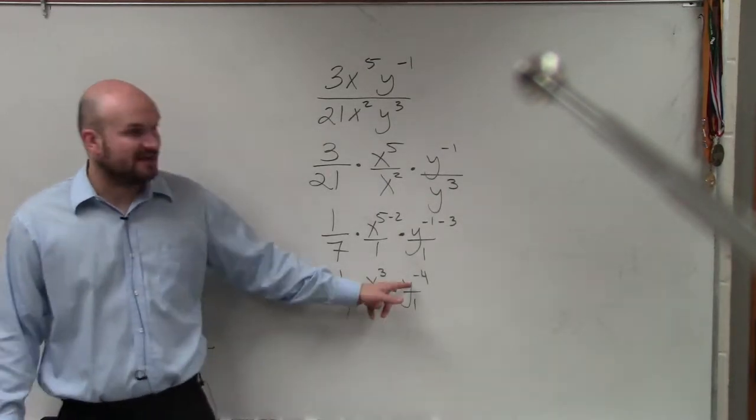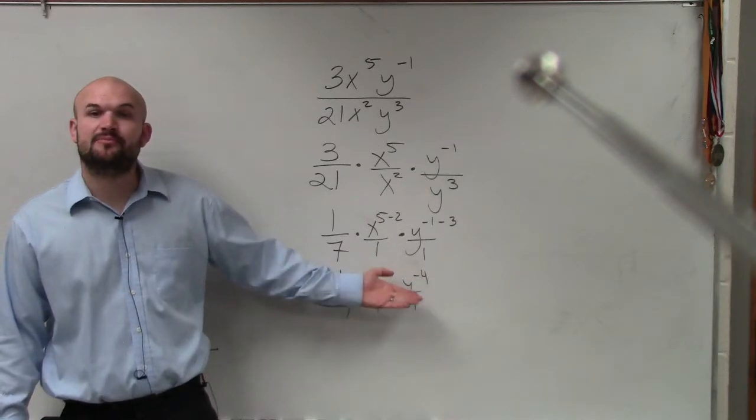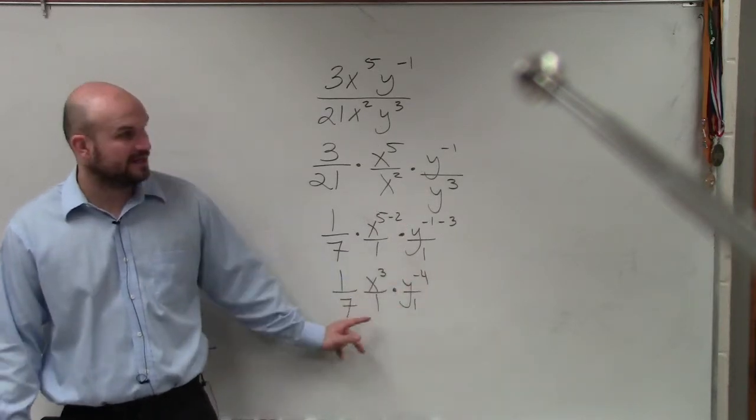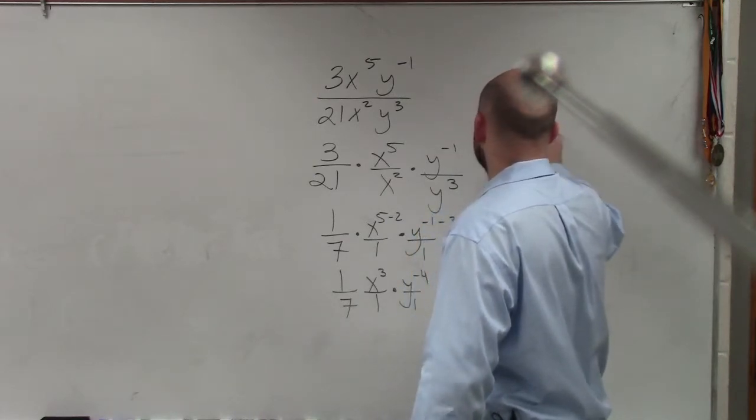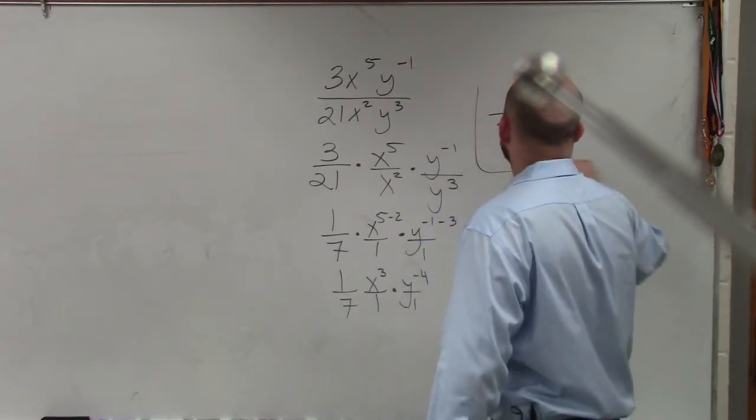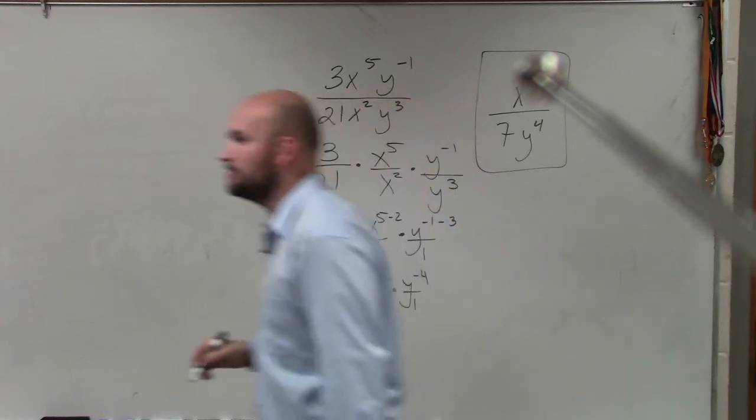Then, as the last thing we talked about, when you have a negative exponent, to write it positive, you've got to put it as a reciprocal. So that's going to now be in the denominator. So your final answer is x cubed over 7y to the 4th. That should have been your final answer.